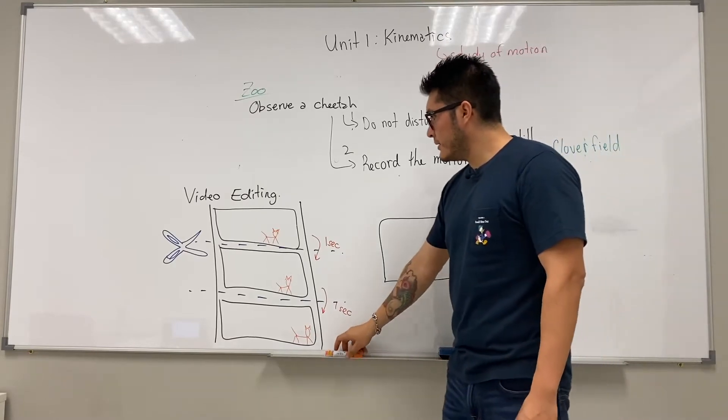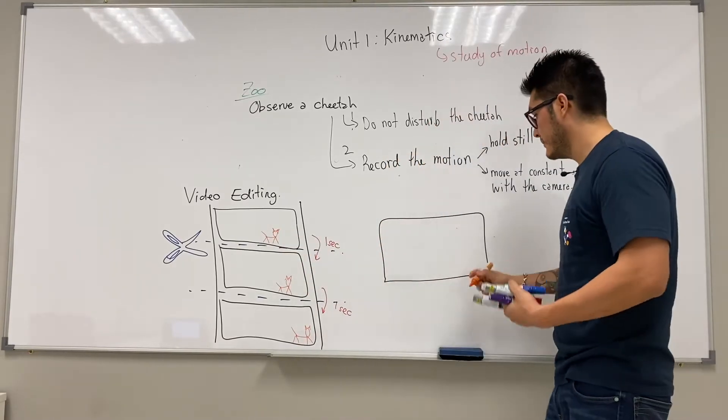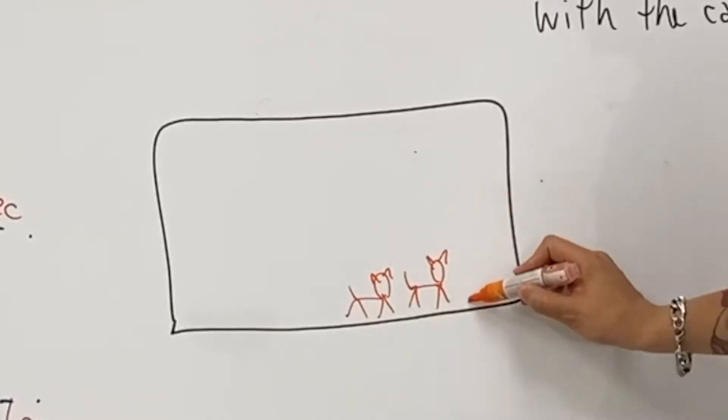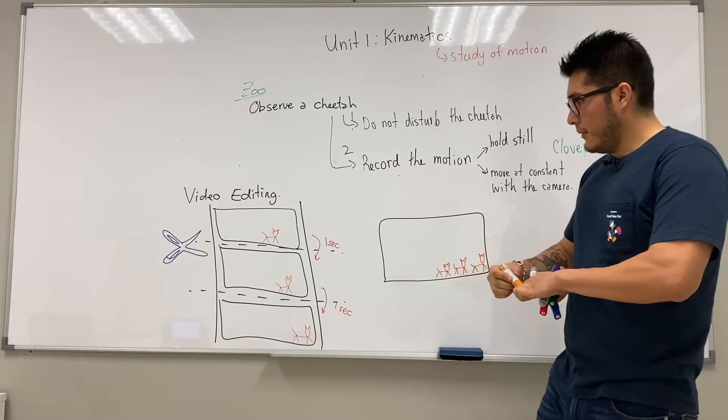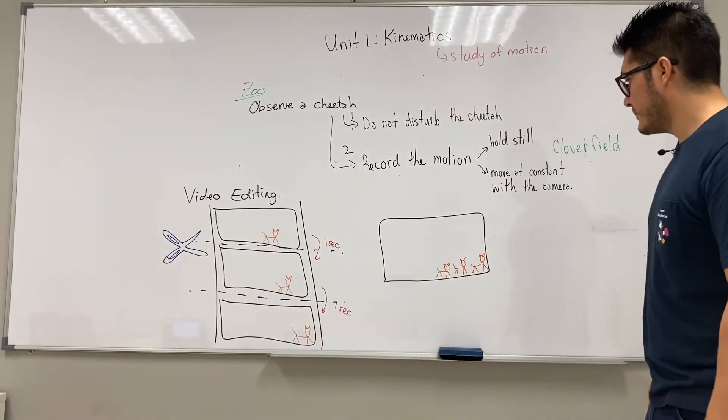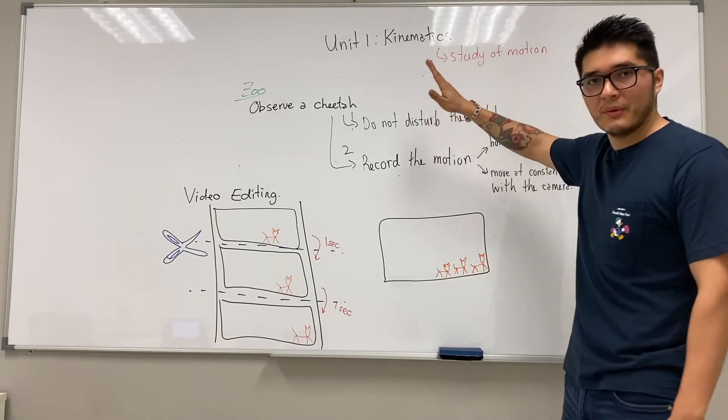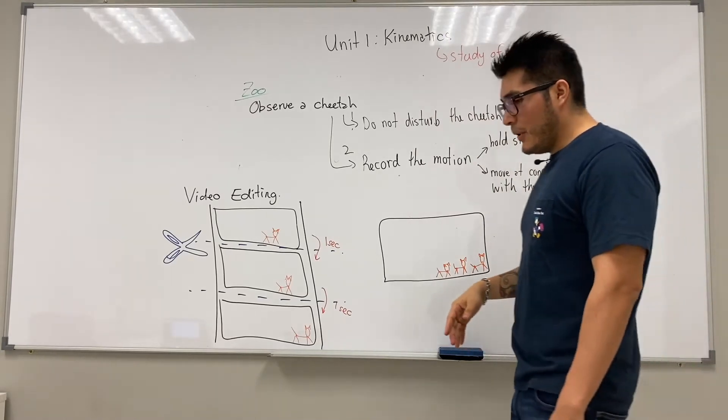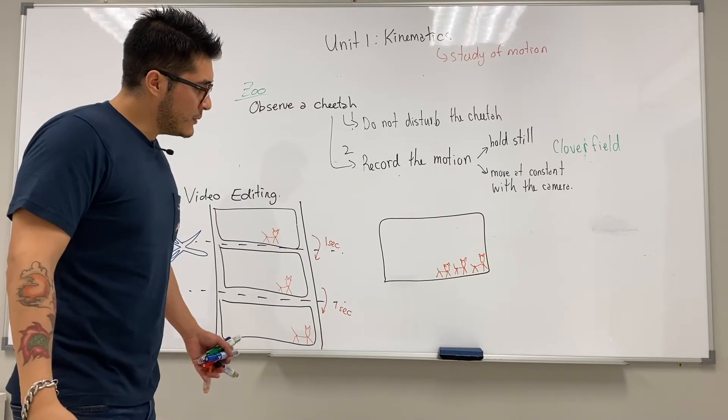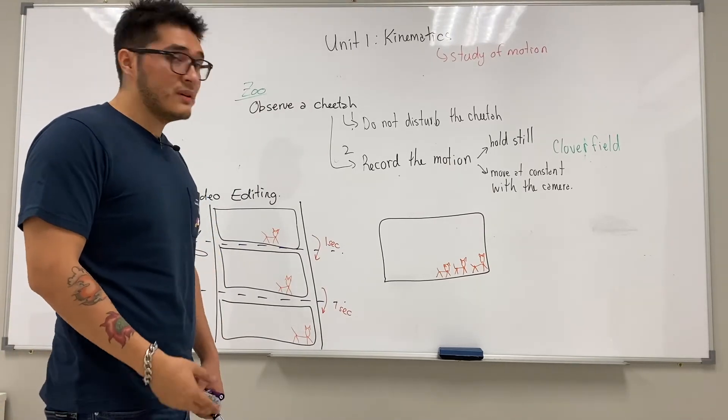And instead of seeing the cheetah only once, we're going to see three cheetahs, right? Because we stacked them up and we had three cheetahs. Now we're going to be approaching a very specific type of diagram that's going to help us to study motion. I'm going to introduce them shortly, but as you can tell, my drawings are not the best. So we need to make another approximation to make the drawings easier to represent motion.